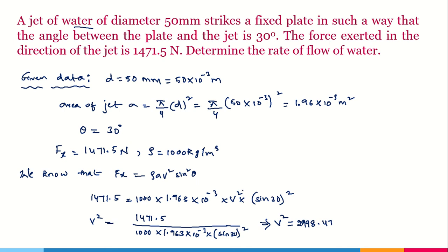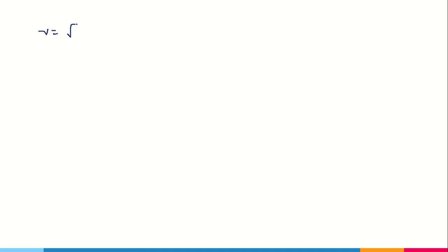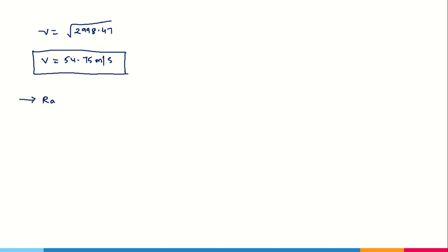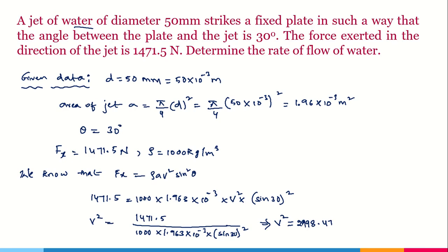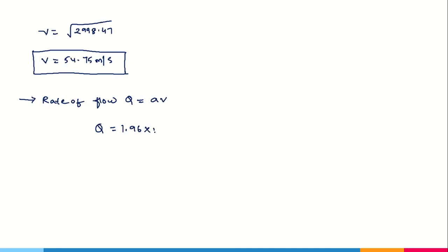Solving gives V² = 2998.47, so V = √2998.47 = 54.75 m/s. Now calculating the rate of flow: Q = A × V = 1.963 × 10⁻³ × 54.75 = 0.107 m³/s. This is how you calculate the value of discharge for the stationary inclined case.